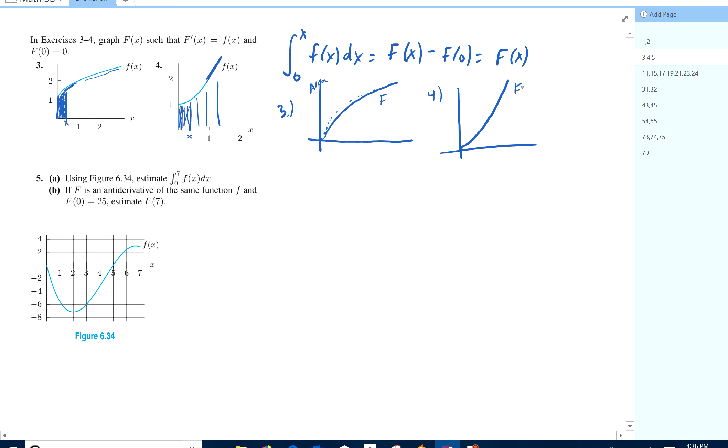And number five, use this figure to estimate the integral from zero to seven. Okay, so to estimate it, the scale is the big thing you have to look out for. So each box is two units. So one, two, three, four, five, and a half, six. Roughly negative six down here, since we're just approximated.